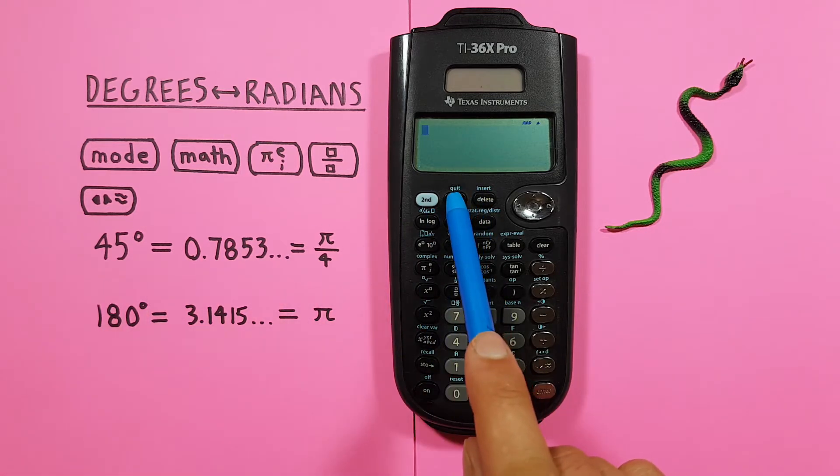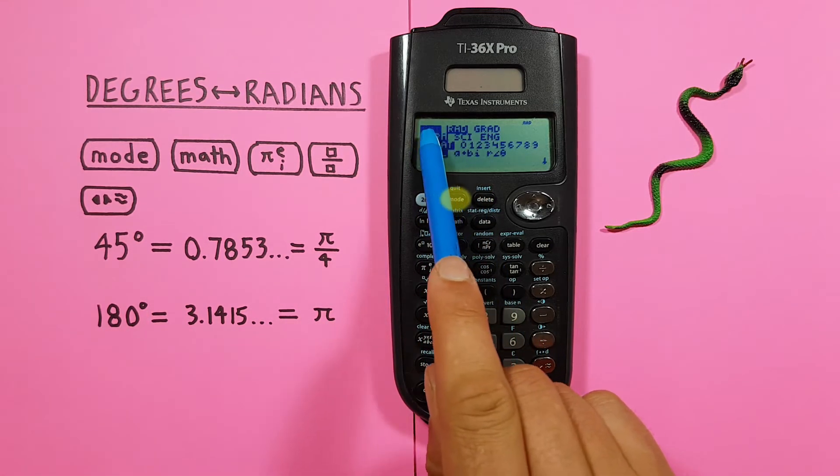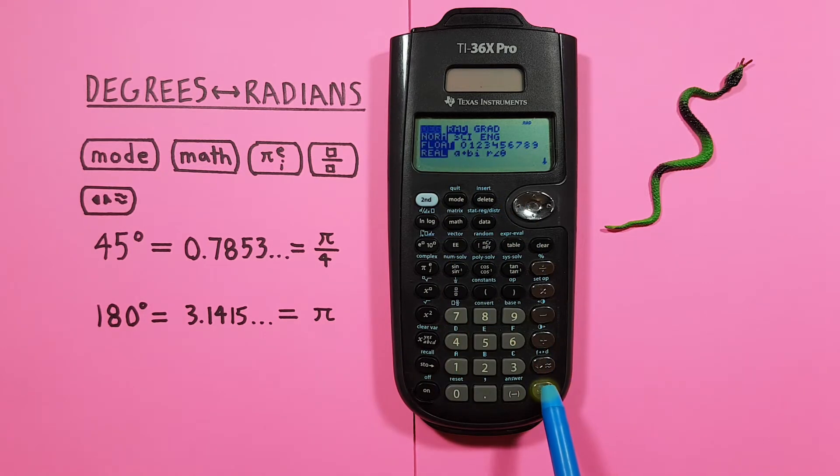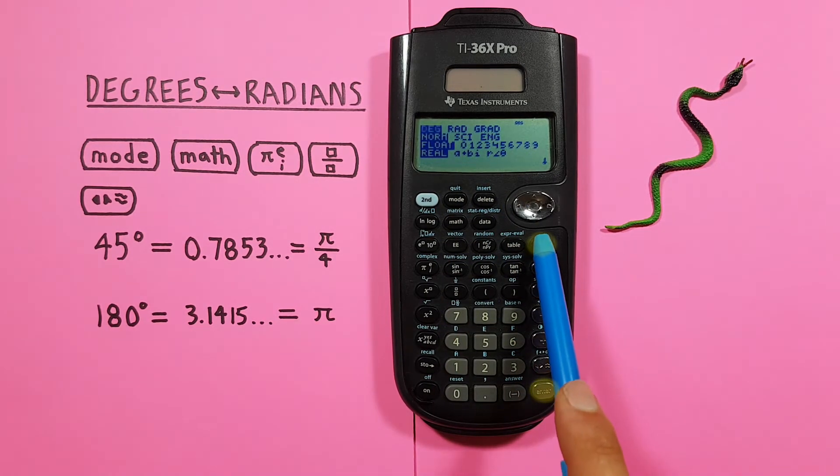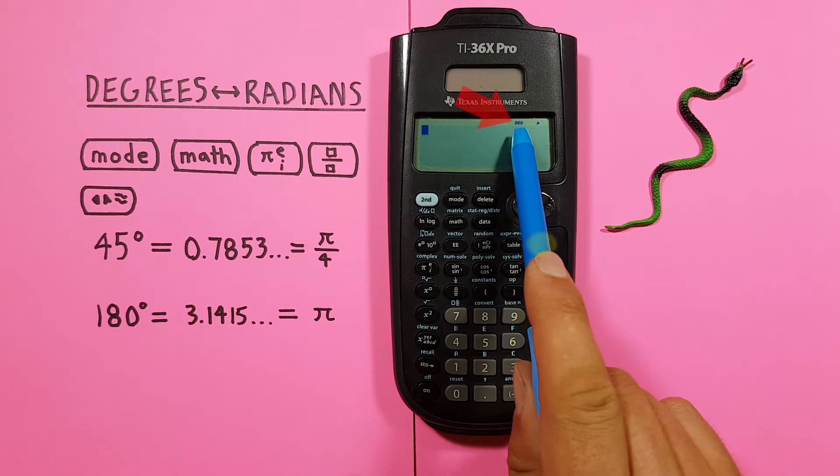We go Mode. Highlight the DEG. And press Enter. And then we can clear out of there. And now we see DEG at the top of our screen. So we know we're good.